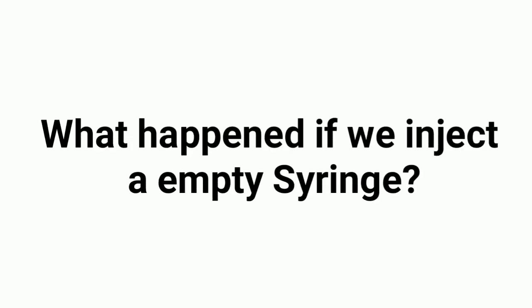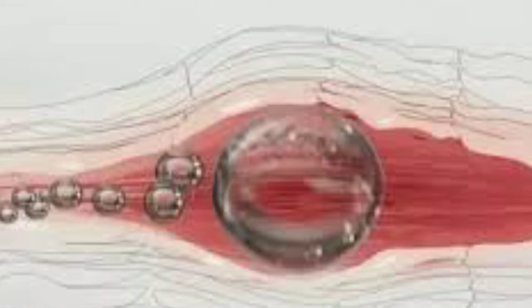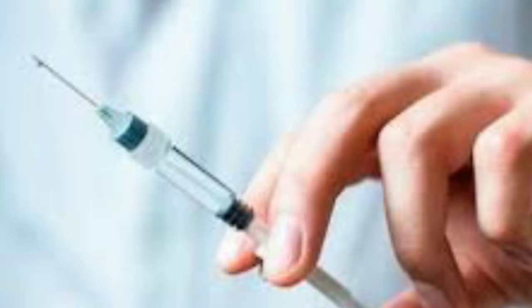What happens if we inject an empty syringe? This method is called air embolism. An air embolism, also called a gas embolism, occurs when one or more air bubbles enter a vein or artery and block it. When an air bubble enters a vein it's called a venous air embolism; when it enters an artery it's called an arterial air embolism. These air bubbles can travel to your brain, heart, or lungs and cause a heart attack, stroke, or respiratory failure. Air embolisms are rather rare.